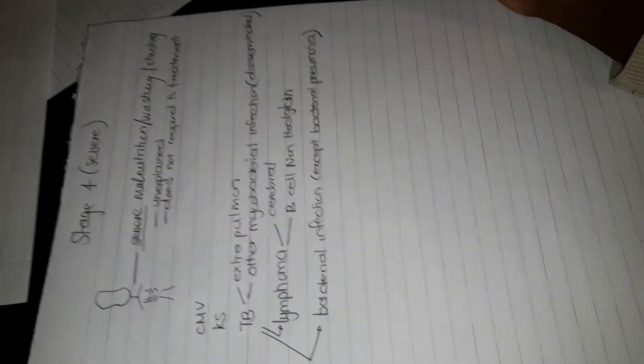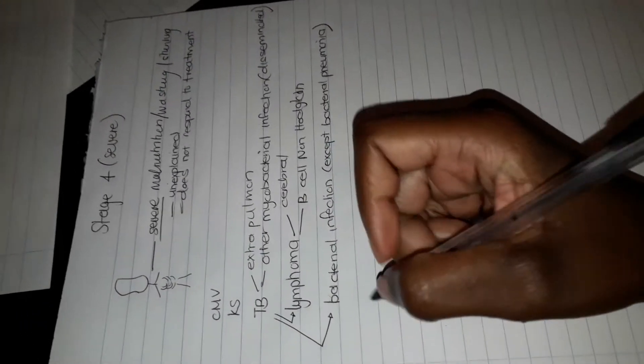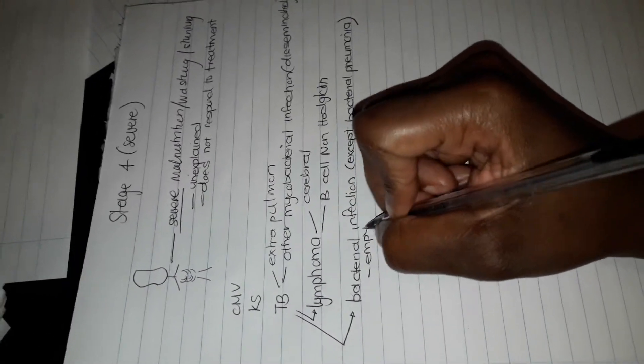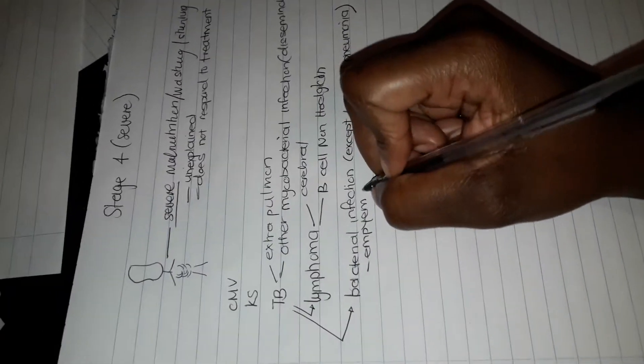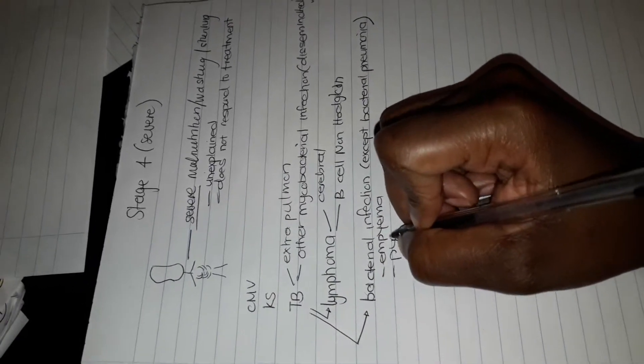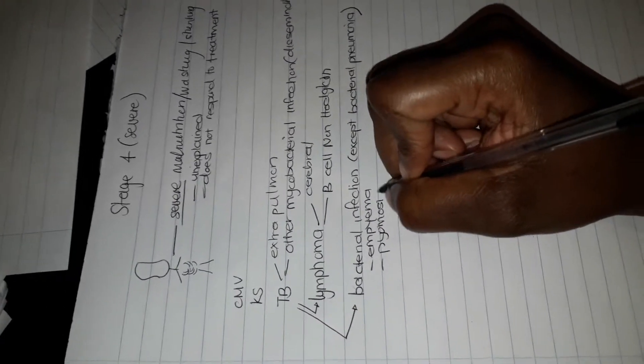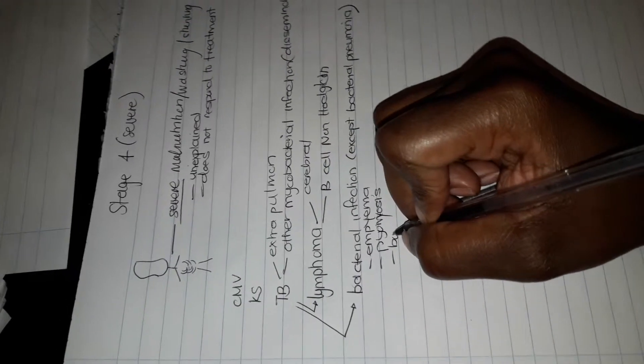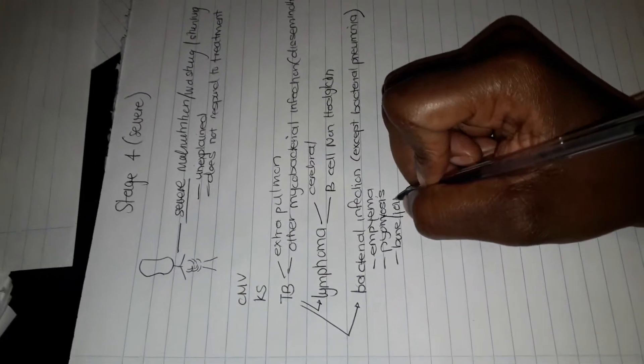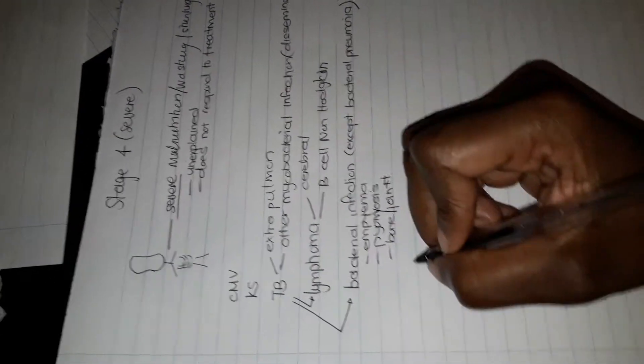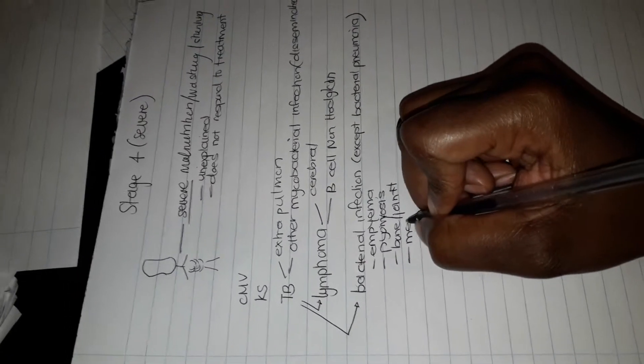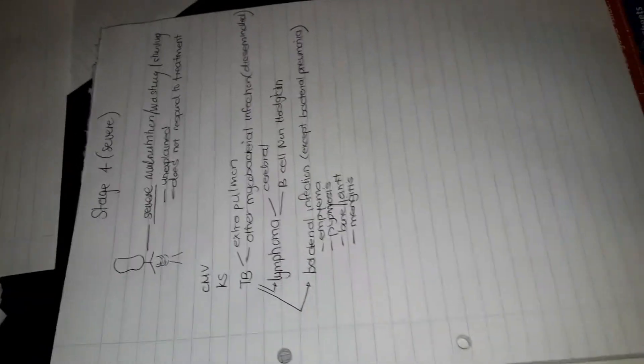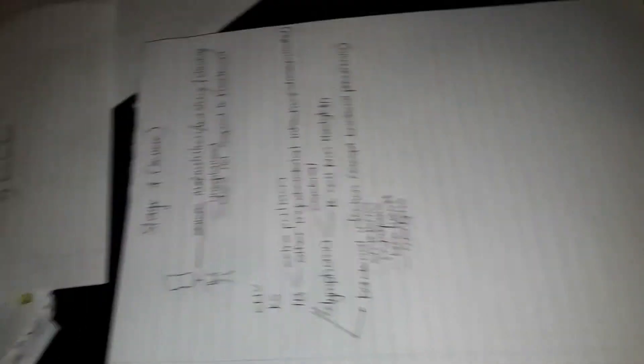What types of bacterial infections would this be? It will be things like empyema, pyomyositis, bone and joint infections, and also meningitis. So all these bacterial infections, it's not limited to this, but it excludes bacterial pneumonia.